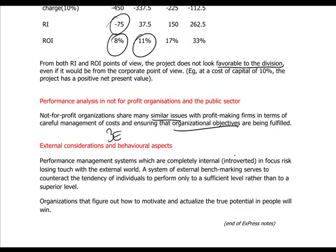As the balanced scorecard also hints, a company focusing only on internal factors will not be very effective or efficient in the long term. They must also consider the external world: what competitors are doing, how the market is performing, how innovative they should be, and how to train and motivate their people. Only companies that figure out how to motivate and actualise the true potential in their people will be winners in the long term. This is the end of our express videos on ACC AF5 Performance Management — good luck in your exams!